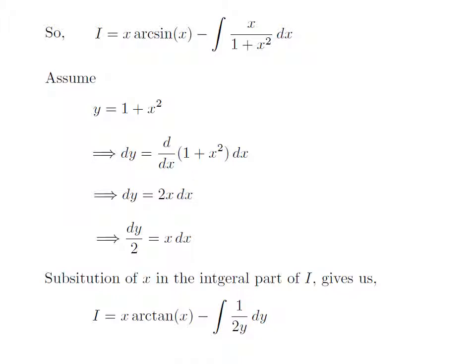Here I have substituted 1 plus x squared by y, and x into differential of x by differential of y divided by 2, only in the integral part of I. So we got I is equal to x into arc tangent of x, minus the integration of 1 divided by 2y, with respect to y.